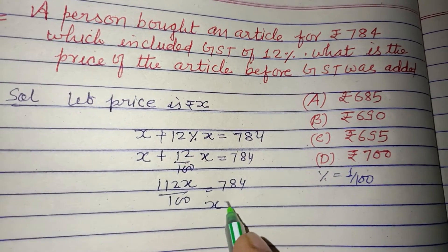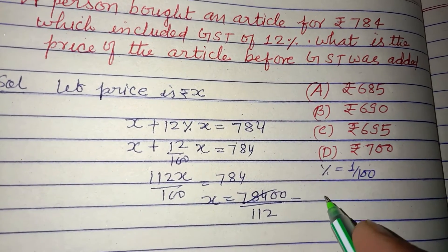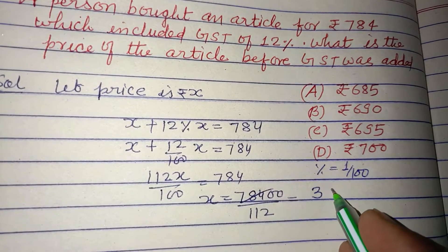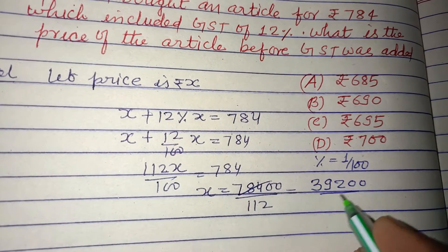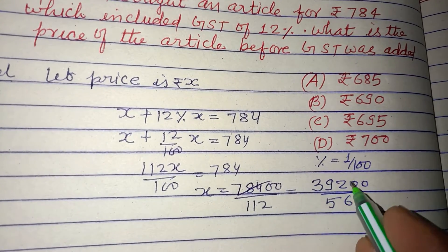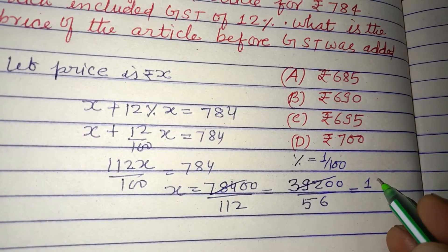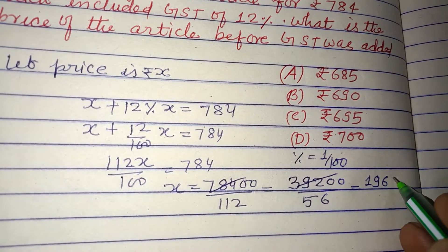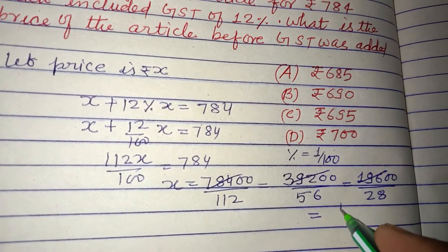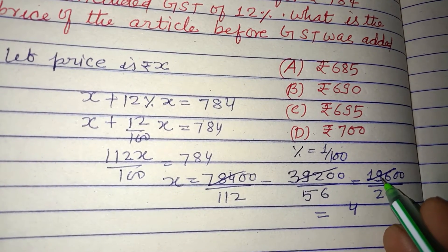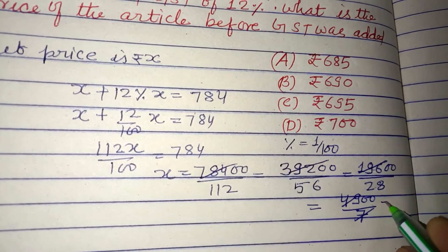Now we divide: 784 multiplied by 100, divided by 112. We divide both 78400 and 112 by 2 to get 39200 upon 56, then divide again by 4 to simplify further, working through the long division steps to find X.